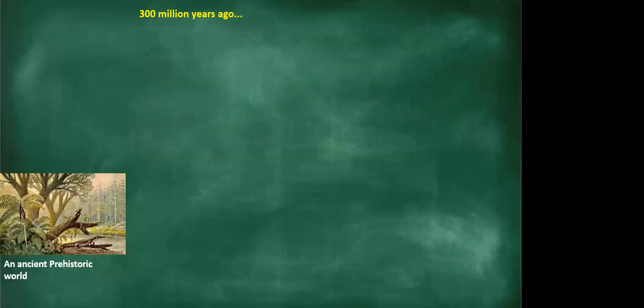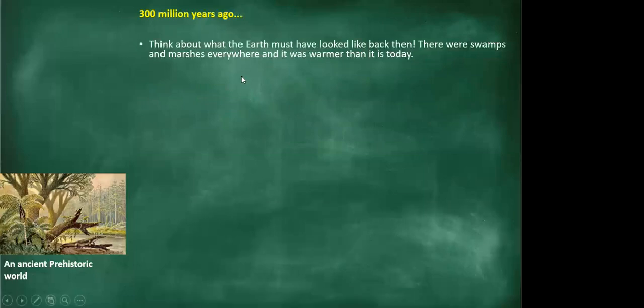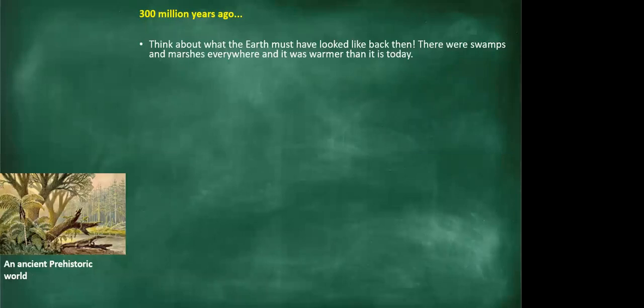Imagine what life was like 300 million years ago — probably swamps and marshes everywhere, and it was warmer than it is today. We spoke about swamps and marshes in our previous lesson on wetlands. Ancient trees, ferns, and plants grew everywhere, and very weird-looking animals roamed the earth, with even stranger-looking fish living in the rivers and deep in the oceans.